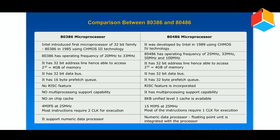The 80386 microprocessor has a 32-bit data bus. The 80486 also has a 32-bit data bus.